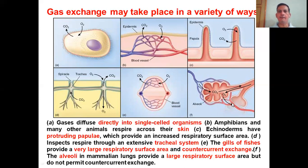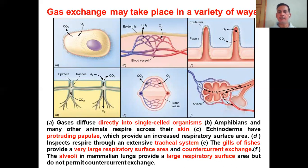In higher evolved organisms such as mammals or humans, we have specialized structures called alveoli. These alveoli are nothing but sacs of tissue where gaseous exchange takes place. Among all these structures, alveoli have the largest surface area. A single lung contains thousands of alveoli, which largely increases the respiratory surface area compared to lower organisms, providing sufficient surface area for the exchange of gases.